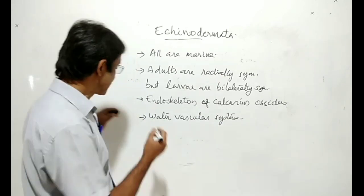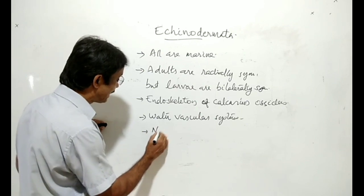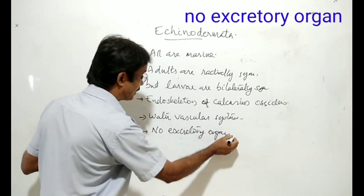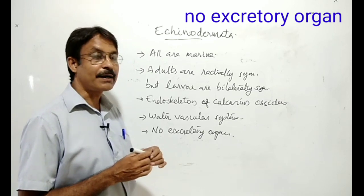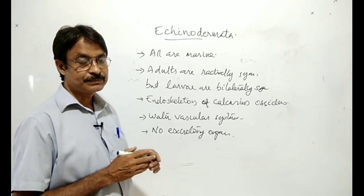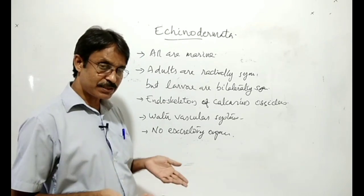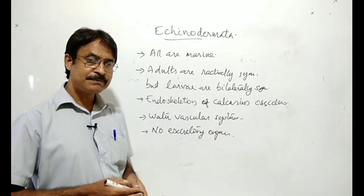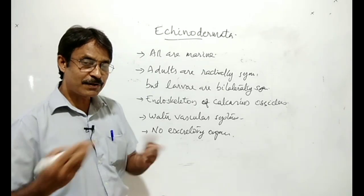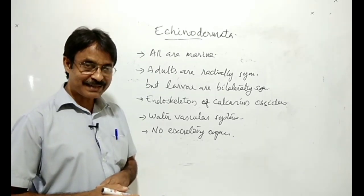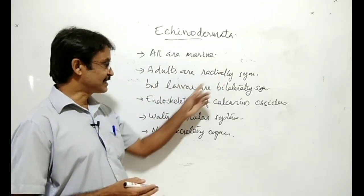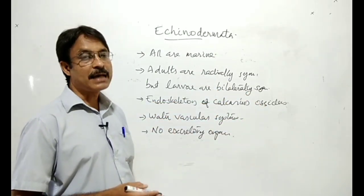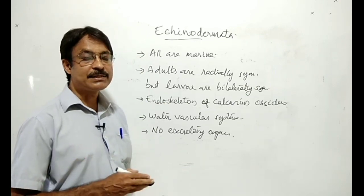The water vascular system does four functions: locomotion, food capture, food transport, and respiration. Next feature: they have no excretory organ. No excretory organ. Sexes are separate, fertilization is external, development includes larval stage. Adults are radially symmetric but larvae are bilaterally symmetric, so they have a free-swimming larvae which is bilaterally symmetric, so their development is indirect.